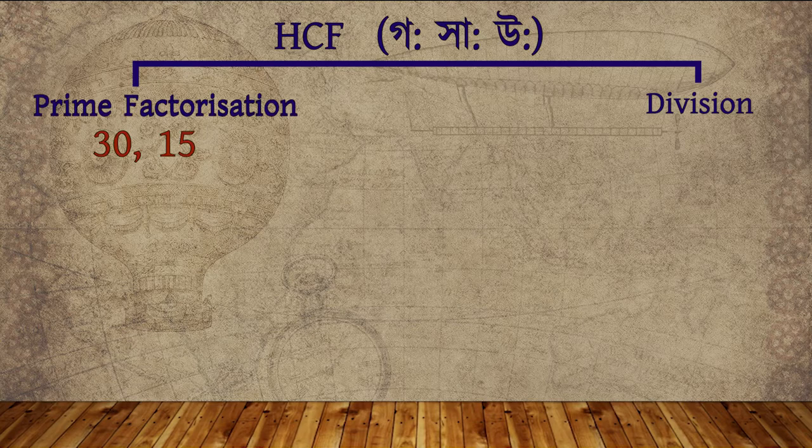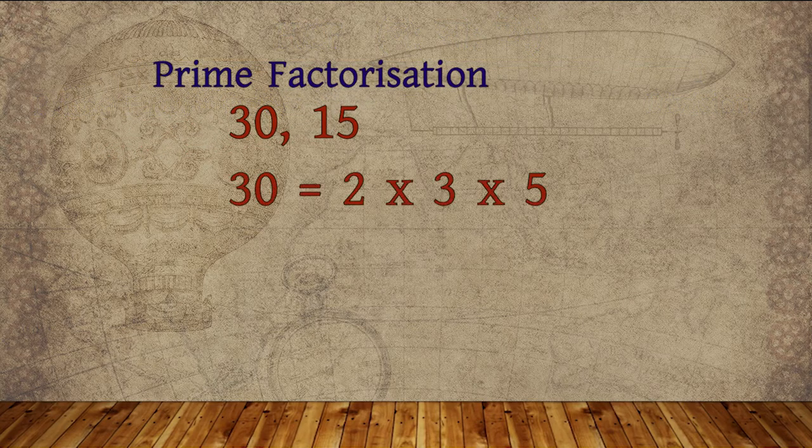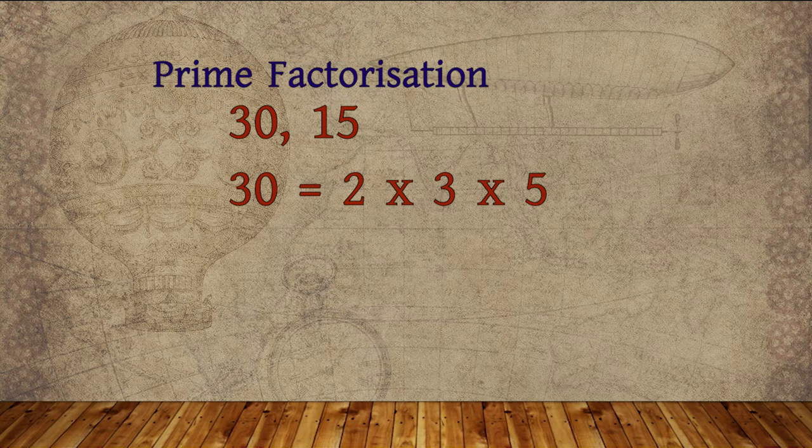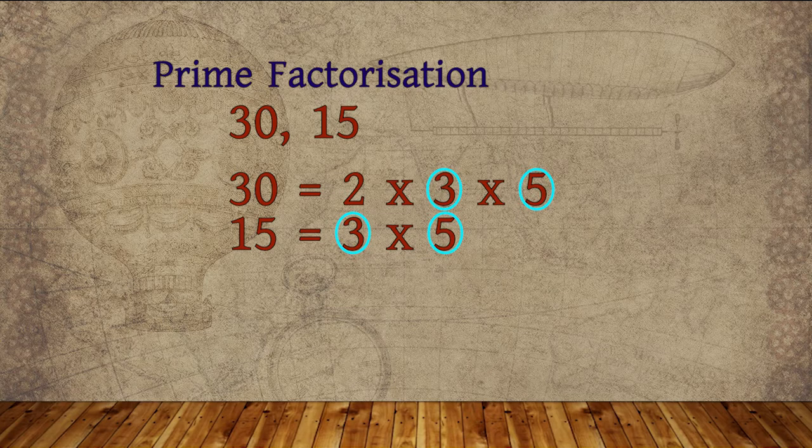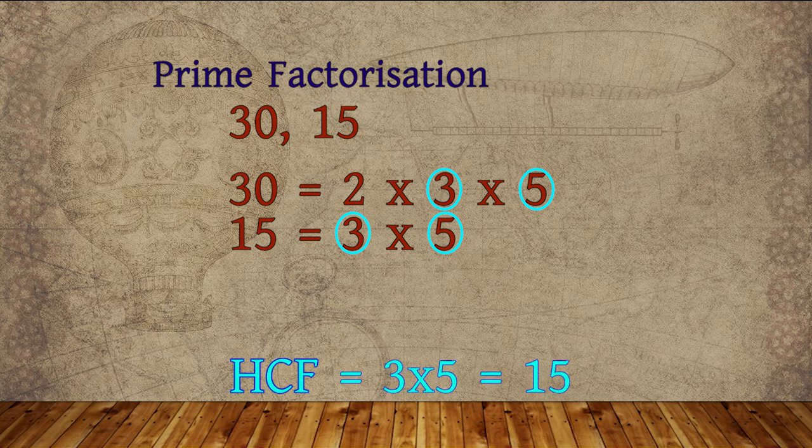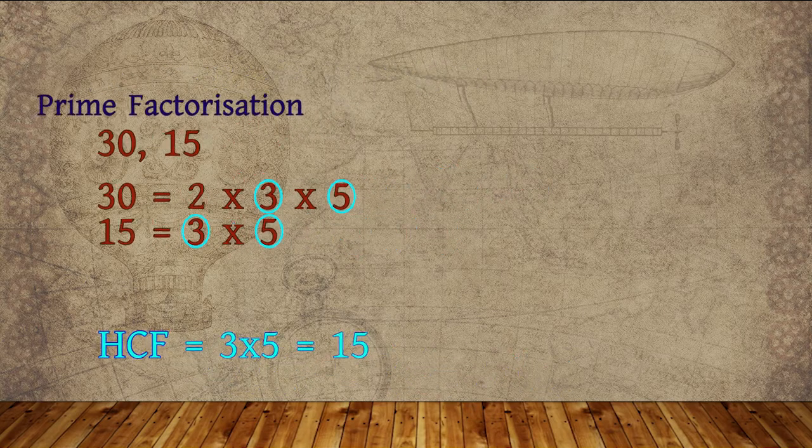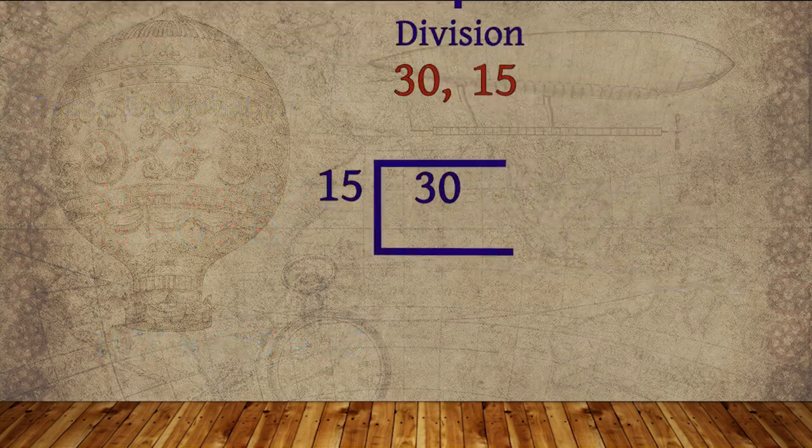Using prime factorization method, let us find the HCF of 30 and 15. 30 is equal to 2 into 3 into 5. 15 is equal to 3 into 5. 3 and 5 are the common factors of 30 and 15, so the HCF will be 3 into 5 equal to 15. If we use the division method, then